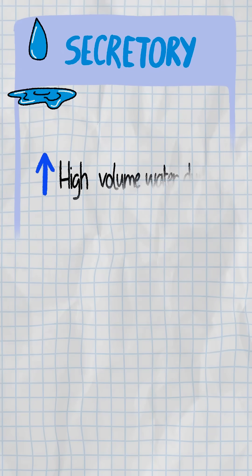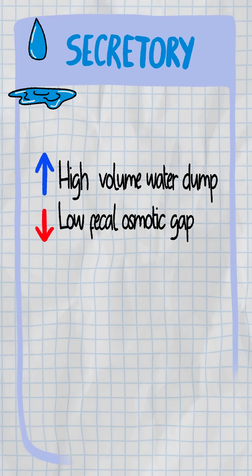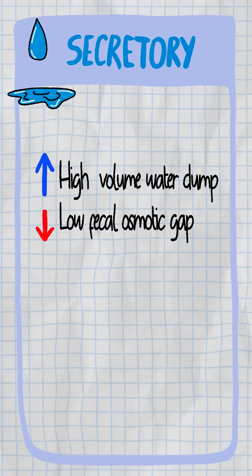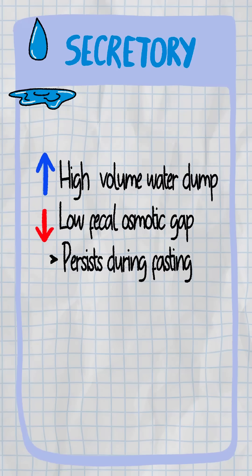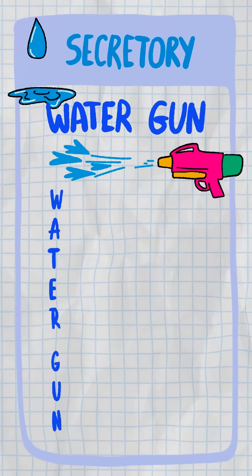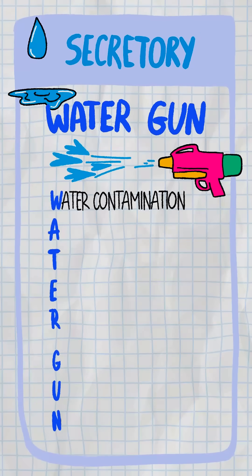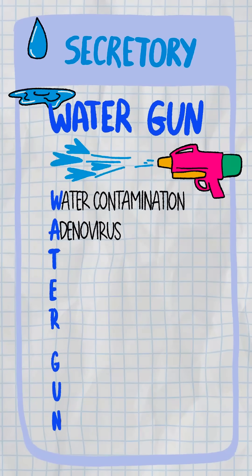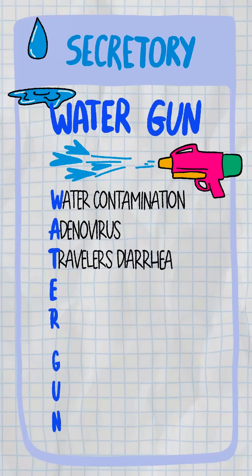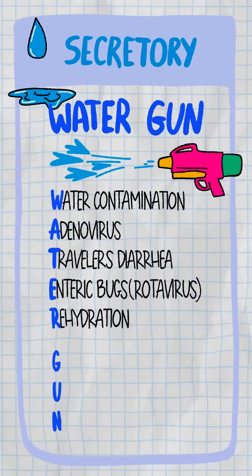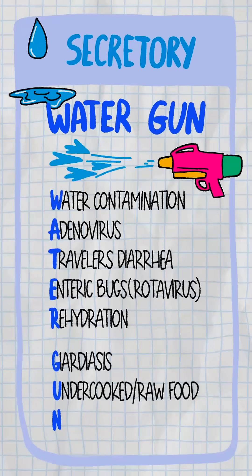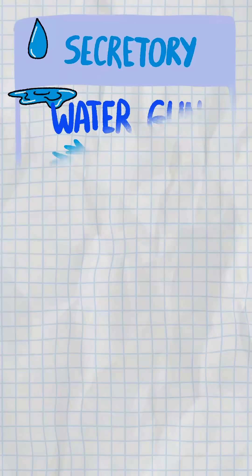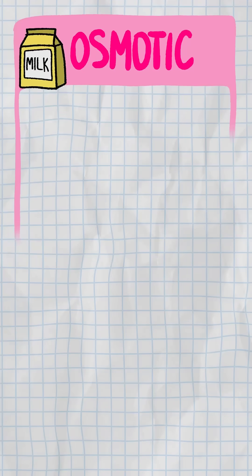Secretory diarrhea: high volume water dump, low fecal osmotic gap, and it keeps going even if the patient fasts. Think of the mnemonic WATER GUN — Water contamination, Adenovirus, Traveler's diarrhea, Enteric bugs, Rehydration errors, Giardia, Undercooked food, Norovirus.